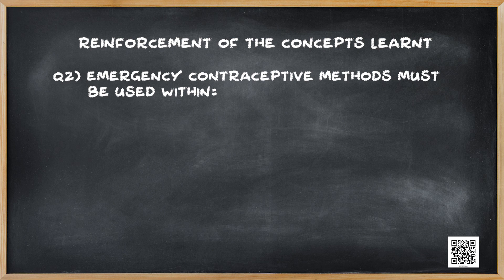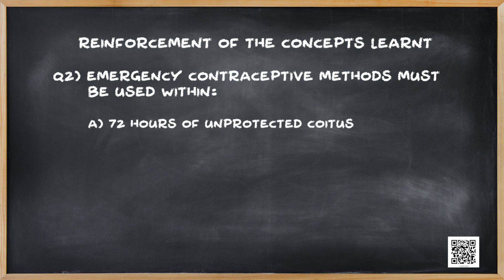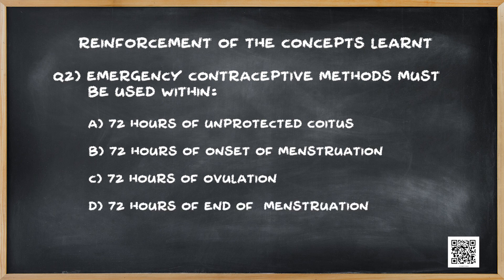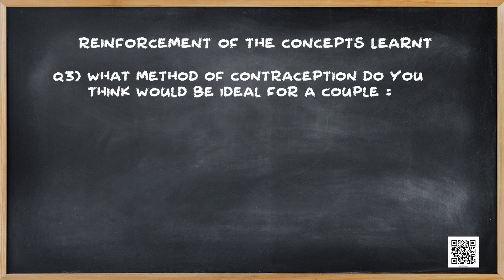Question 2: Emergency contraceptive methods must be used within — A. 72 hours of unprotected coitus, B. 72 hours of onset of menstruation, C. 72 hours of ovulation, or D. 72 hours of end of menstruation. The answer is A — 72 hours of unprotected coitus.